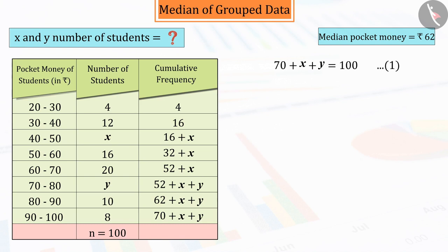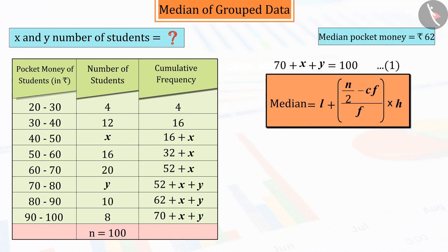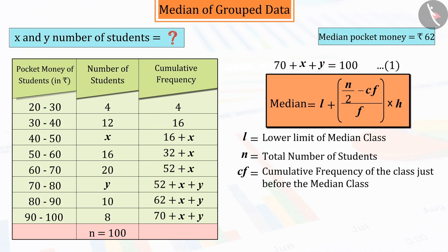If we talk about the median, we can see from the median formula: L or the lower limit of the median class, N which is the total number of students, Cf or the cumulative frequency of the class just before the median class, F or the frequency of the median class, and h that is class size will be required.